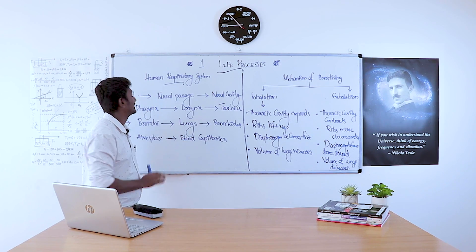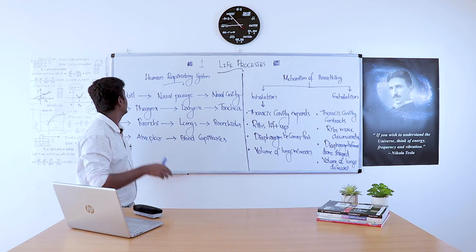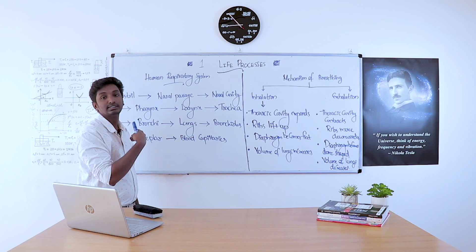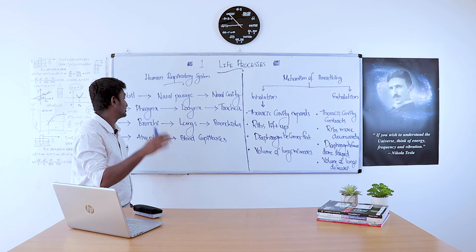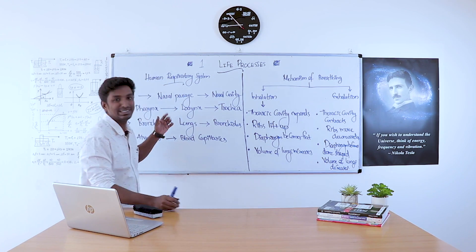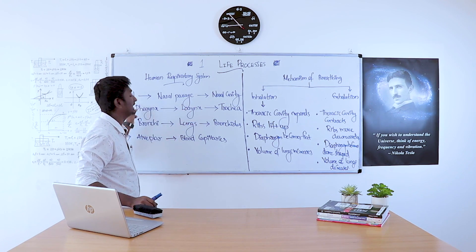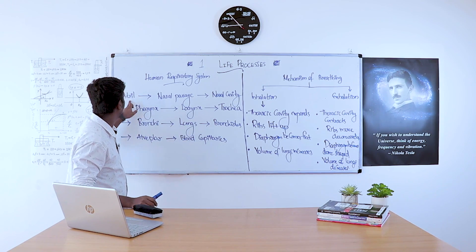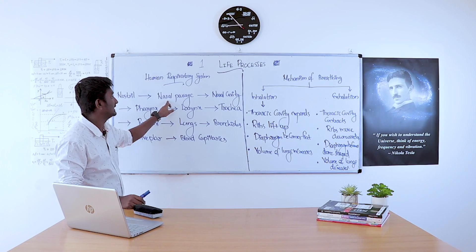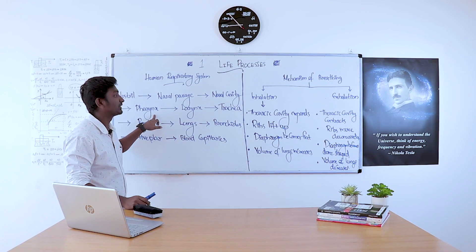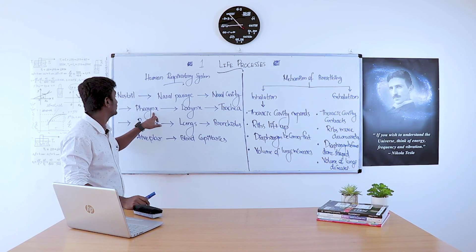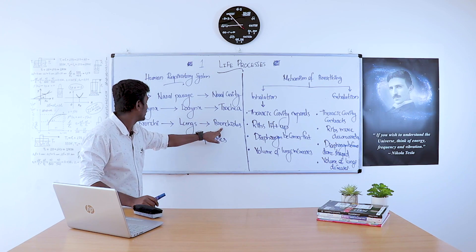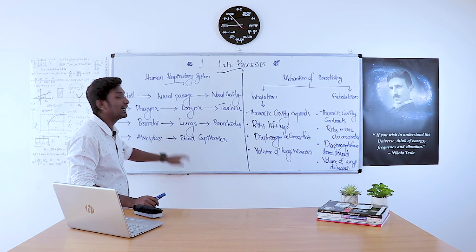Now, respiration in human beings — the human respiratory system. Air enters through the nostrils and finally reaches the lungs, from where it spreads to all parts of the body through blood capillaries. The passage of air goes from nostrils through the nasal passage, nasal cavity, pharynx, larynx, trachea, bronchi, lungs, bronchioles, alveoli, and finally reaches the blood capillaries.